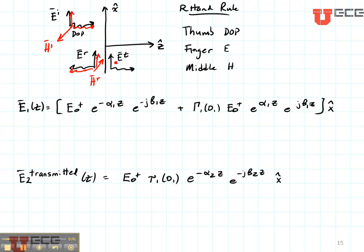Let's do this for the transmitted field. Thumb in the direction of propagation, finger in the direction of the electric field, and then the magnetic field is going to end up in the same direction as the incident field does.